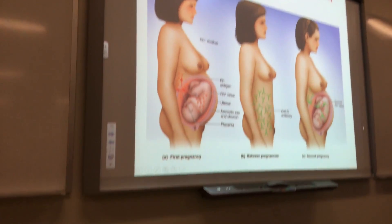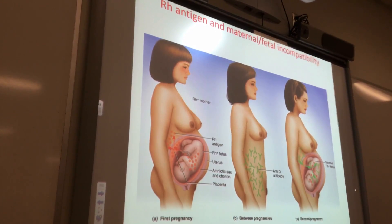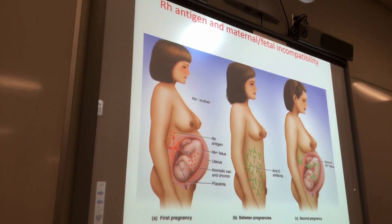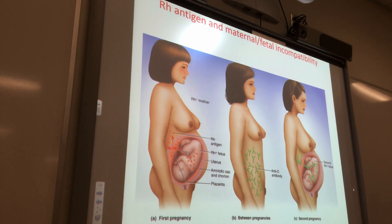It doesn't matter for the fetus. Her ABO blood type group doesn't matter for the fetus. It just matters if the mom is Rh negative and the baby or fetus is Rh positive. So in this cartoon, it's showing that she's Rh negative, so that means on her red blood cell, she has no Rh antigen.